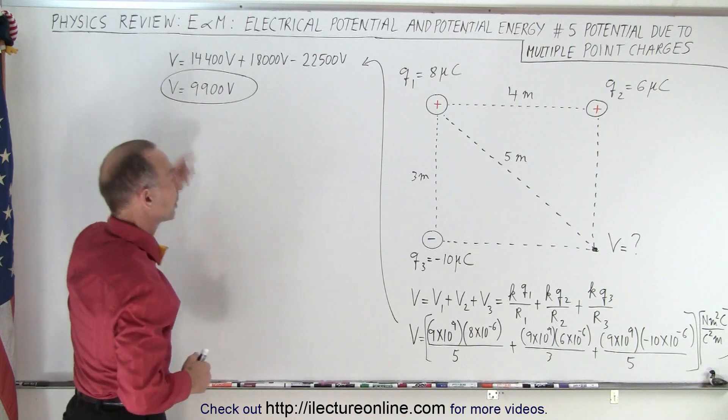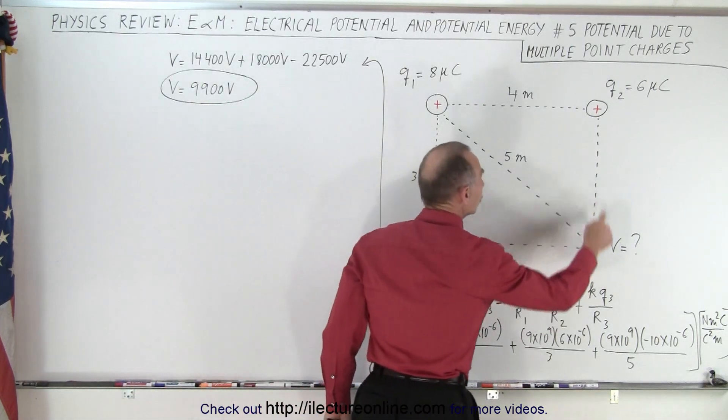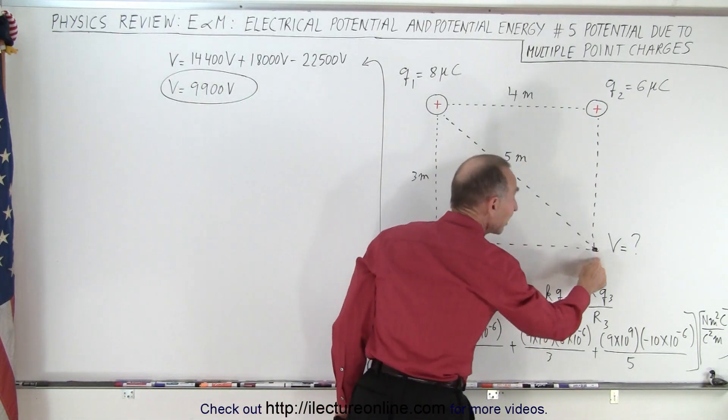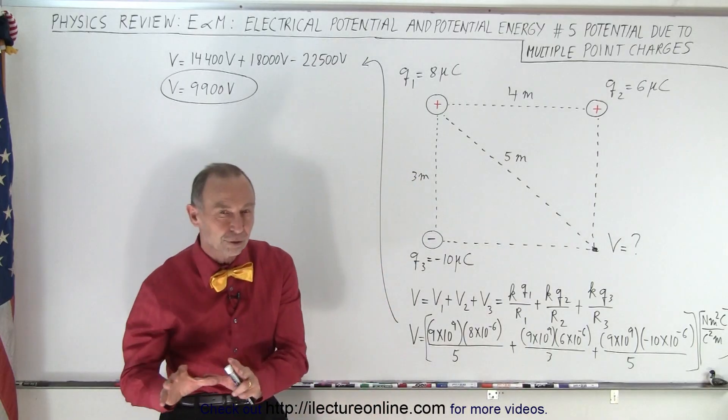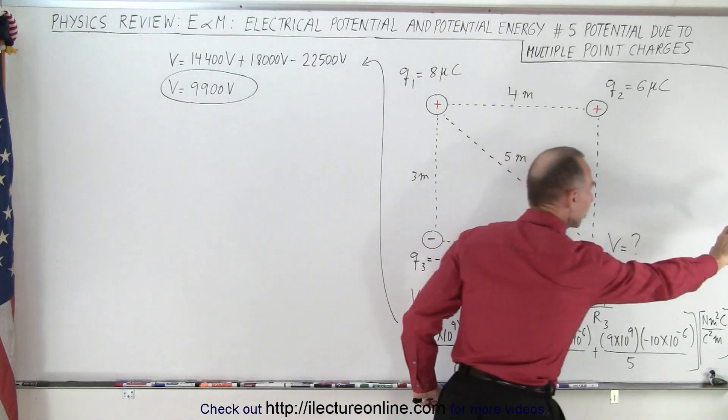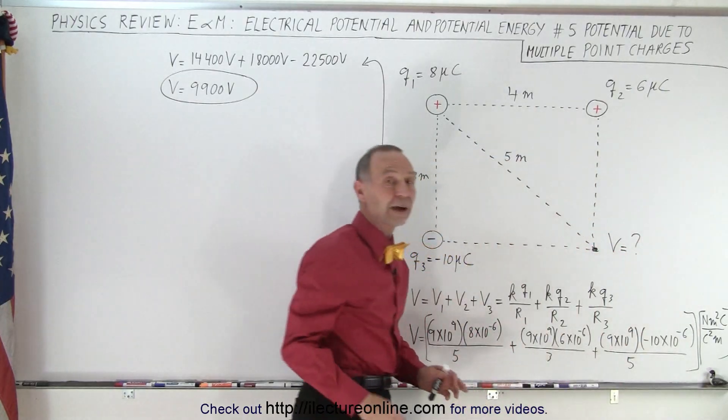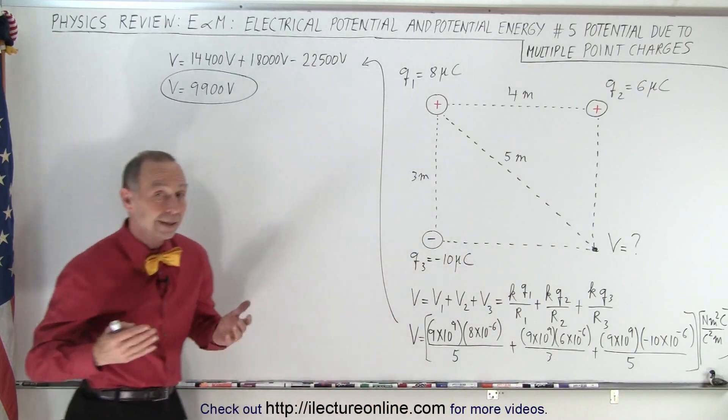So when we add all together, the potential at that location due to the presence of these three charges is 9,900 volts, in reference to being infinitely far away where the voltage then is defined to be zero. And that is how it's done.